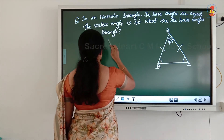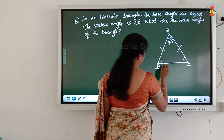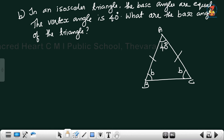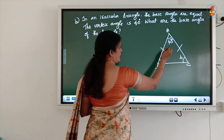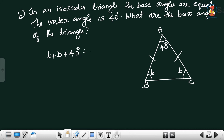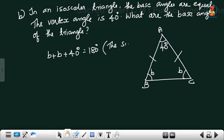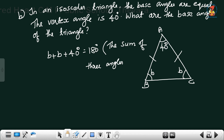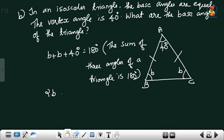In an isosceles triangle, the base angles are equal. The vertex angle is 40 degrees. Base angles are unknown — let each base angle be b. In triangle ABC, the sum of three angles of a triangle is equal to 180 degrees. Therefore, 40 degrees plus b plus b equal to 180 degrees. By the angle sum property, the sum of three angles of a triangle is 180 degrees.